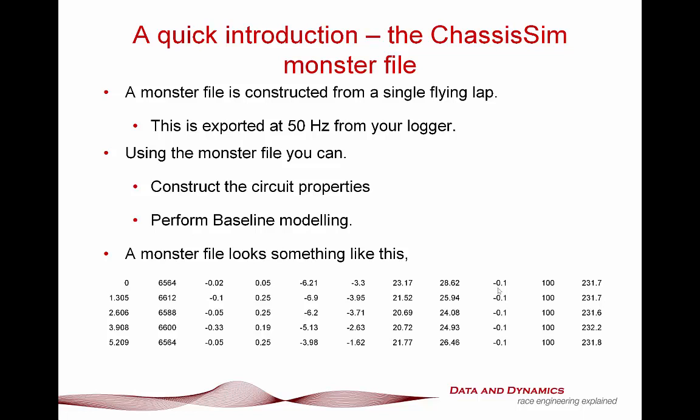The ChassisSim monster file is something I've spoken about at length in various ChassisSim tutorials and boot camps. But to paraphrase my Australian dealer Pat Cahill, if you ever want a list of what you actually need to log from a chassis perspective, the ChassisSim monster file pretty much nails it. Here we've got a data file exported at 50 hertz, with lap distance, RPM, lat G, longitudinal, your damper pots, steer sensor, throttle, and vehicle speed.